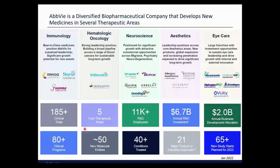AbbVie spun out of Abbott in 2013. When we spun out of Abbott, essentially our only product was Humira, a monoclonal antibody for anti-TNF that admittedly made a lot of money for Abbott. Since then, we have expanded our portfolio of products within immunology, which is the therapeutic area in which I work. Our JAK1 selective inhibitor was approved in 2018, and then Skyrizi, a P19 monoclonal antibody, was also approved around that time.